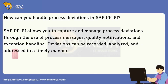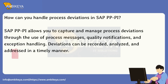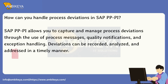How can you handle process deviations in SAP PP-PI? SAP PP-PI allows you to capture and manage process deviations through the use of process messages, quality notifications, and exception handling. Deviations can be recorded, analyzed, and addressed in a timely manner.